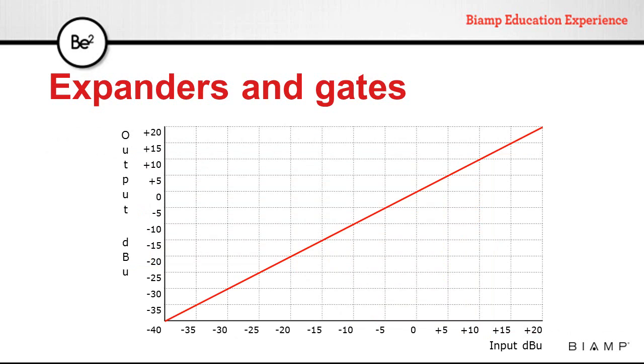The diagonal line represents a unity gain device where at any input level, the output will have the exact same level.